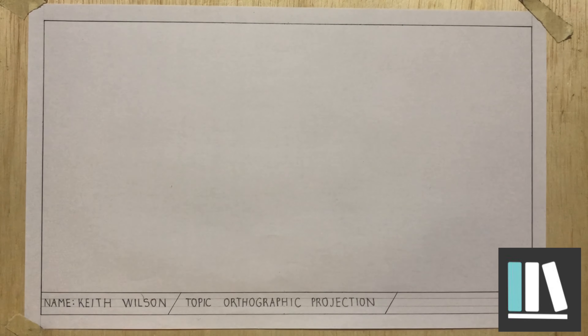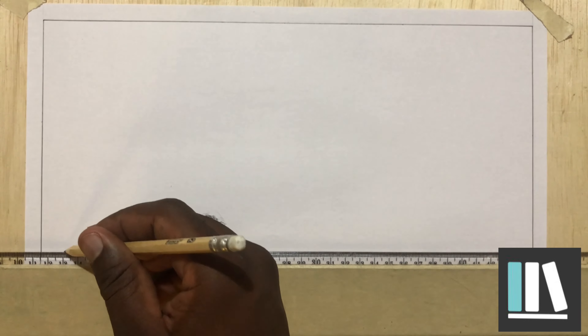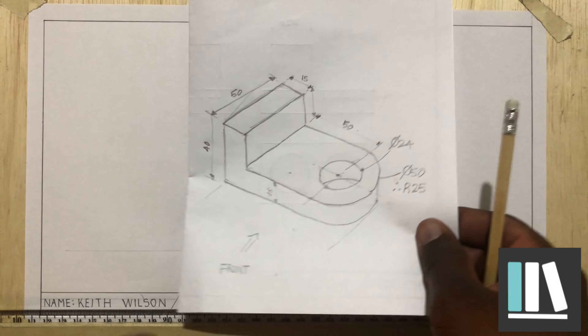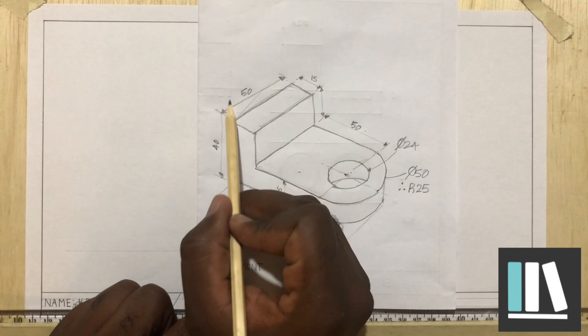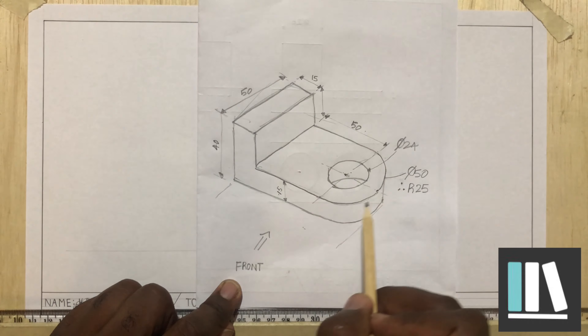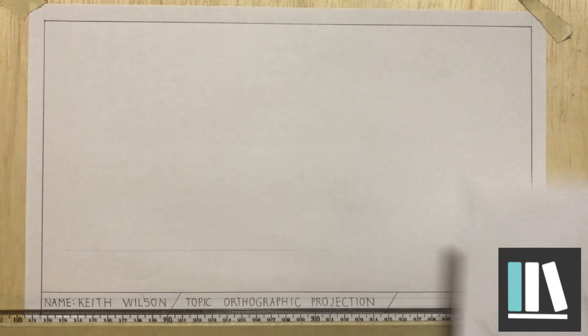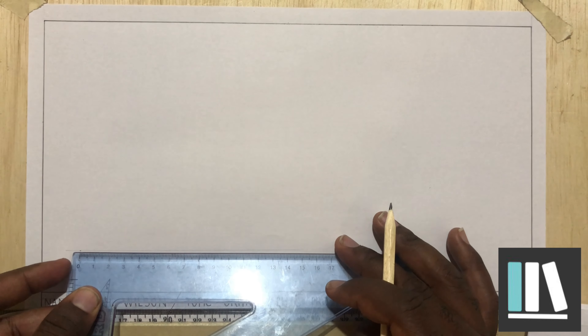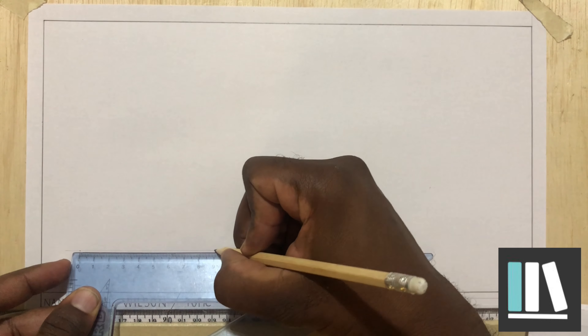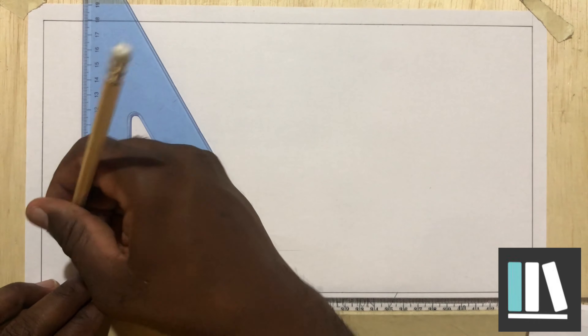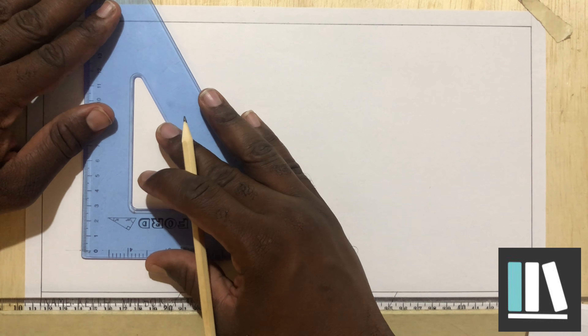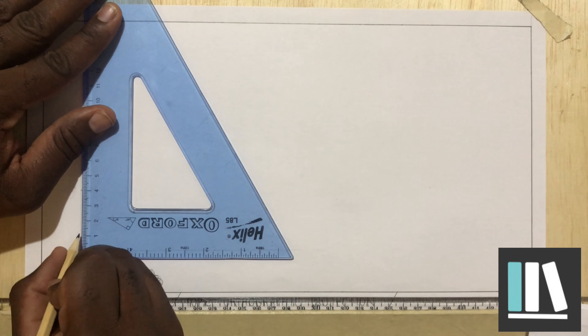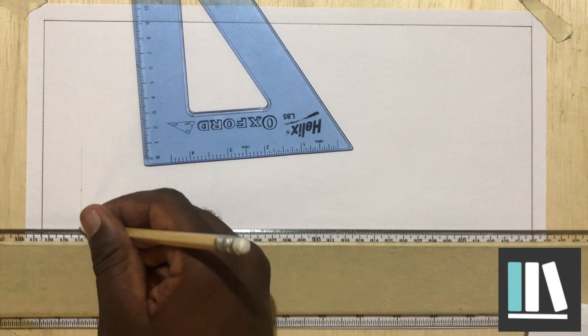I'm going to start off this drawing about here. Remember, the measurement for the entire drawing is 15 plus 50 plus the radius which is 25, giving 90 millimeters. I'll leave a little space on this side for the dimensioning. So initially I'm going to put the 15. The height is 40 millimeters, so I'll put the 40 and the 15 so that I can draw a number of lines at the same time.